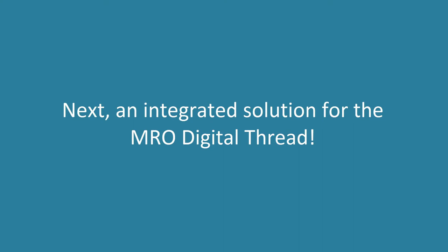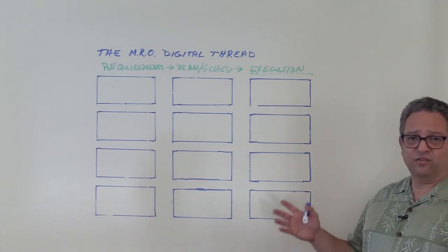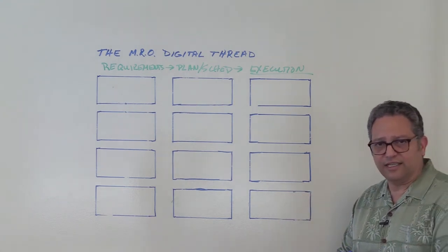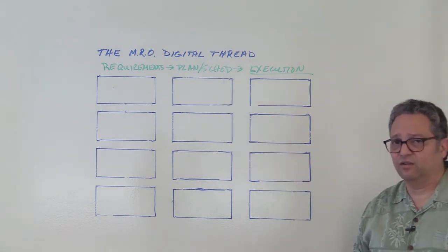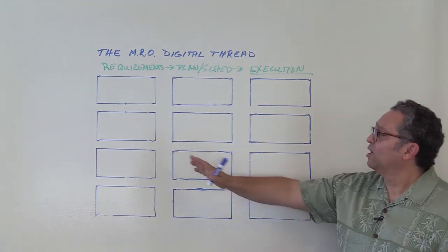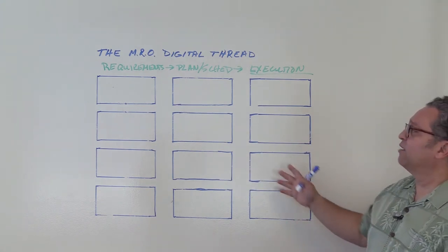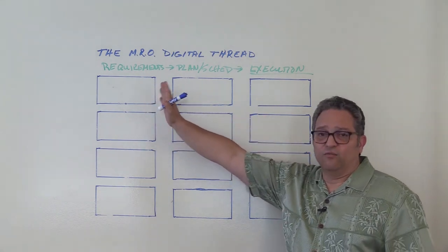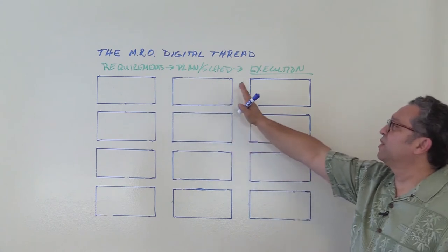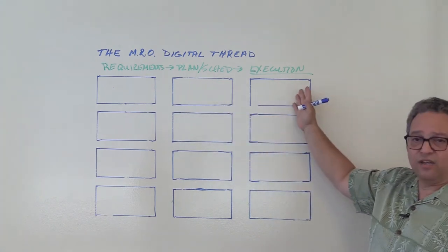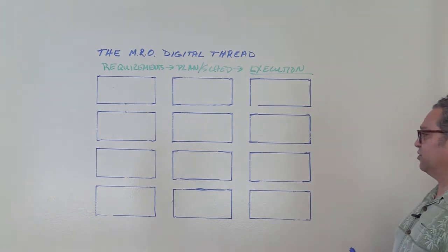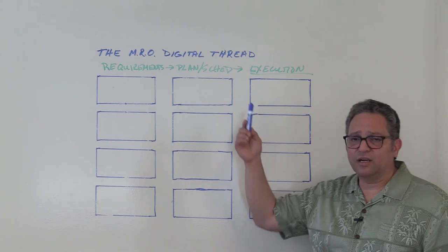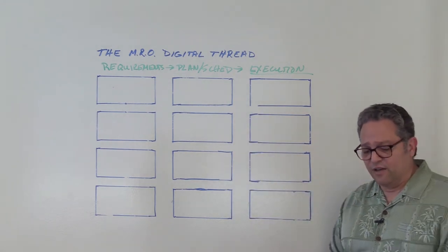Now we're going to talk about the solution to those MRO shop issues by walking through a digital thread for maintenance repair and overhaul. We'll move through this solution map — from requirements to planning and scheduling, to executing the maintenance task, and delivering the product back to the customer.